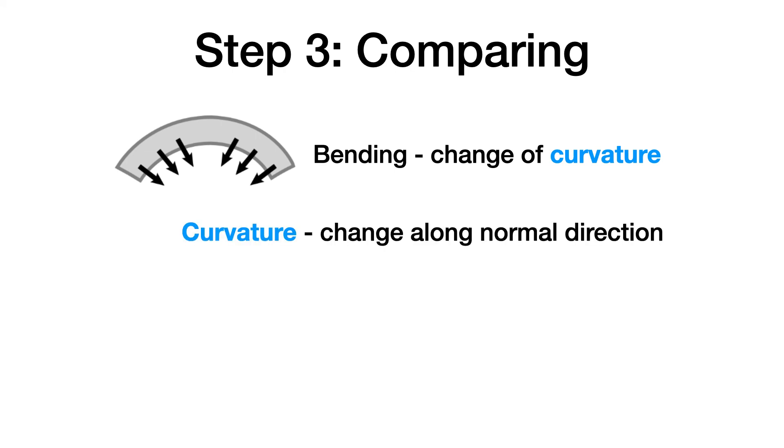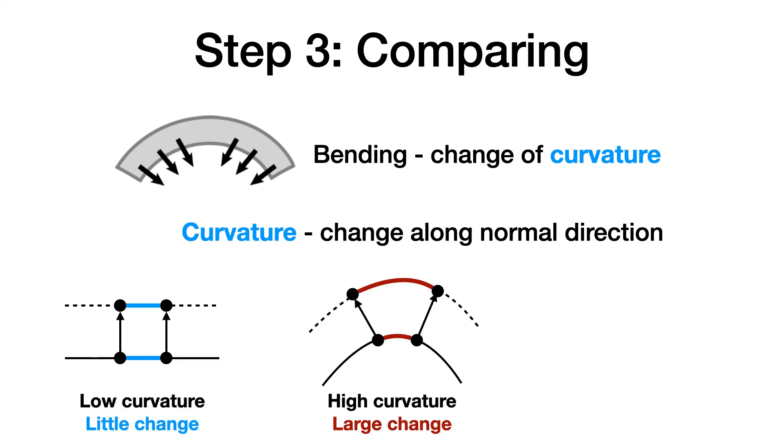Intuitively, curvature can be characterized by the change of tangent dot product along the surface normal direction. For example, if we move the level set along the surface normal direction at constant speed and observe how the tangent vectors change, we will notice that in low curvature areas, tangent vectors will stay roughly the same, while in high curvature areas, the tangent vectors will change a lot.